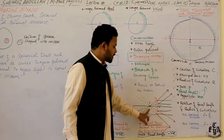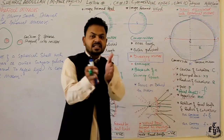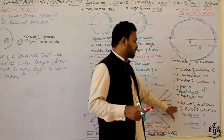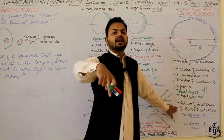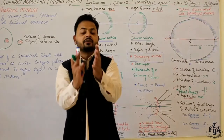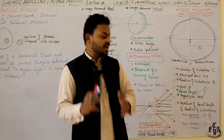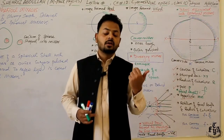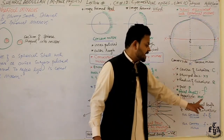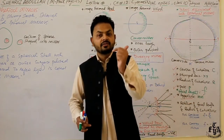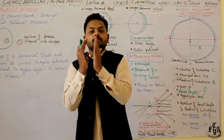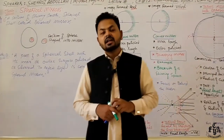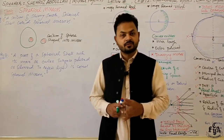For a convex mirror, the distance between principal focus F and pole P is also the focal length. The relation between focal length and radius of curvature: for a concave mirror, f = R/2; for a convex mirror, f = −R/2. That is all about today's lecture. Hope you enjoyed it. Thanks for watching. Allah Hafiz.